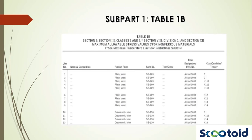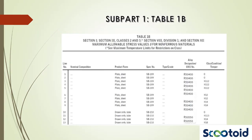Table 1b gives maximum allowable stresses for non-ferrous materials used in Section 1, Section 3 Classes 2 and 3, Section 8 Division 1, and Section 12. The first materials listed in the table are aluminum alloys. These are followed by copper alloys, nickel alloys, and reactive and refractory metals and alloys.